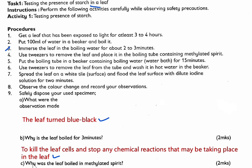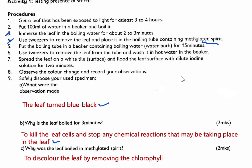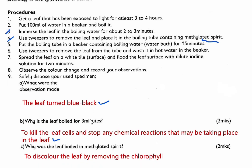Part C asks: why was the leaf boiled in denatured spirit? That is step 4, where you insert the leaf into a boiling tube containing denatured spirit. The reason for boiling in denatured spirit is to discolor the leaf by removing the chlorophyll. That is the function of the denatured spirit — to discolor the leaf by removing the chlorophyll. Those are the two marks.